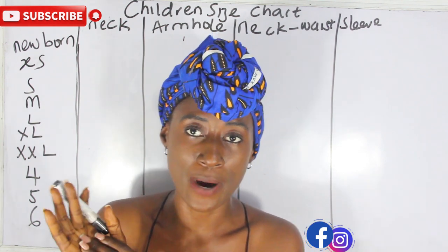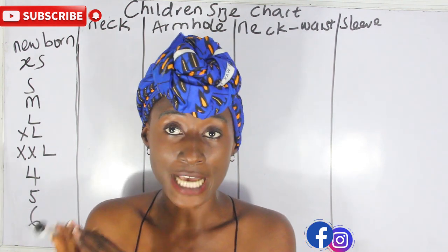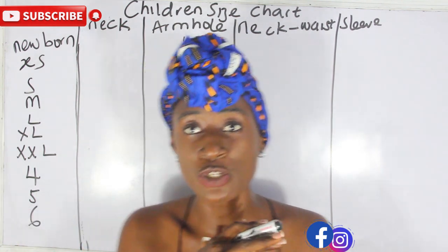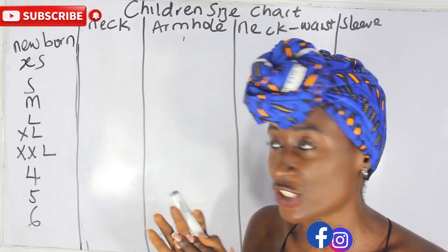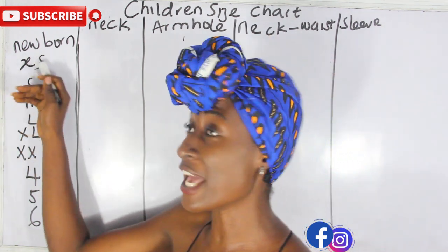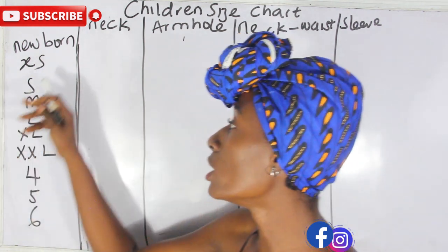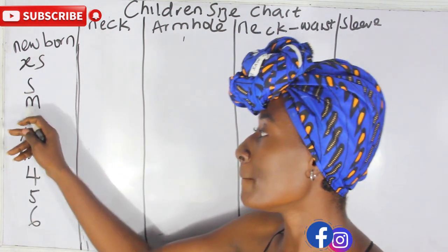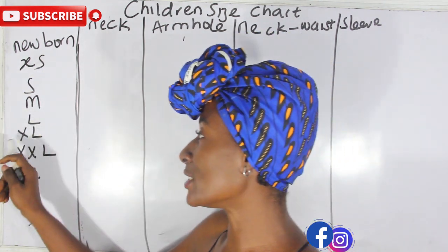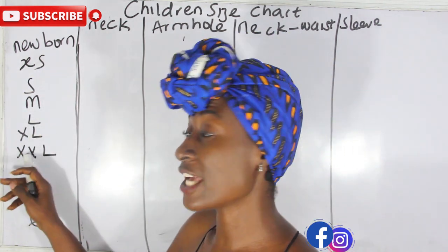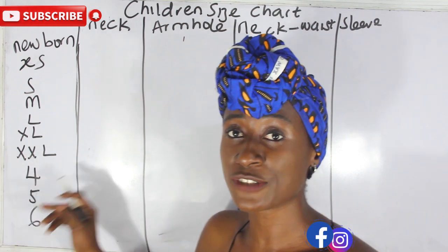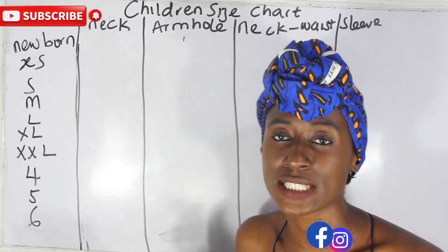So let's go ahead now and get our calculations. For these children's size charts, we have extra small, small, medium, large, extra large, extra extra large, four, five, and six.